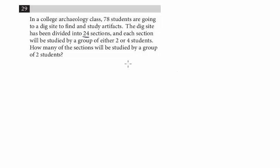We know there are a total of 24 sections, and there's two types of groups, groups with two or four, so let's say X, that would be groups of two, and Y groups of four. Groups of two have two, so it's going to be 2X plus 4Y equals 78.